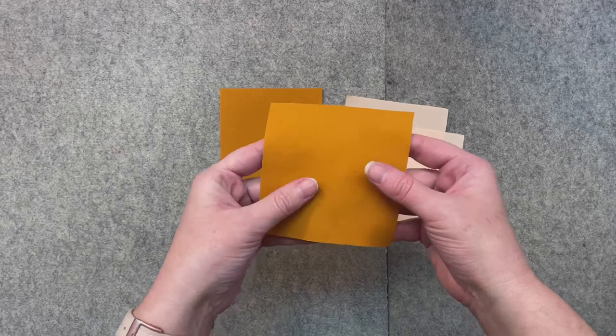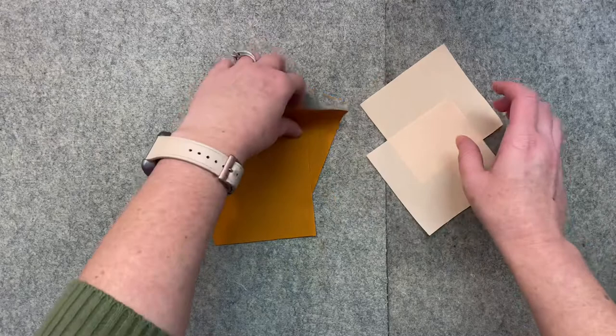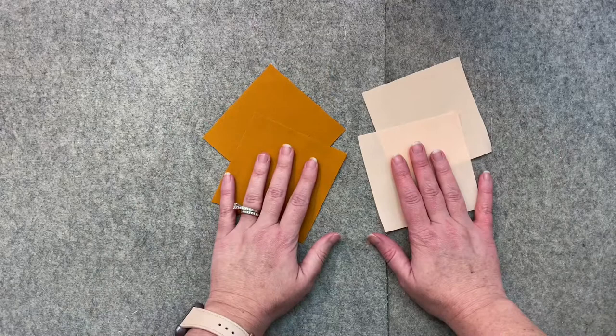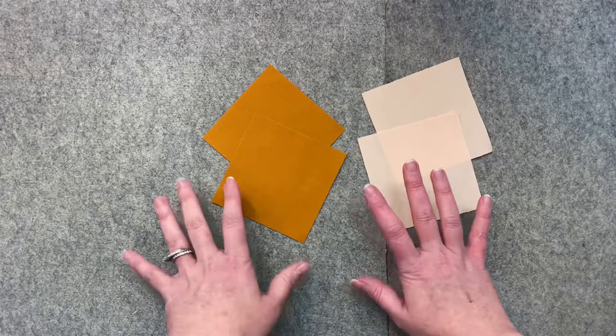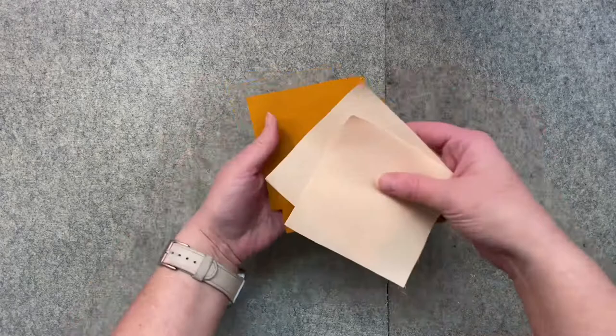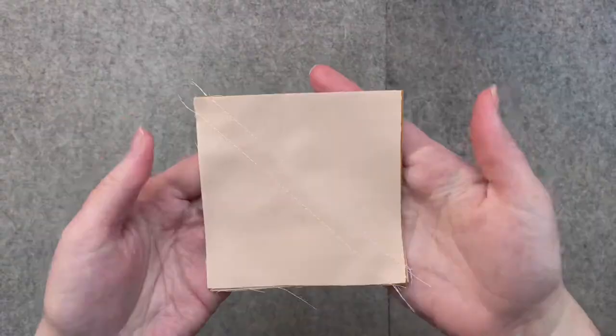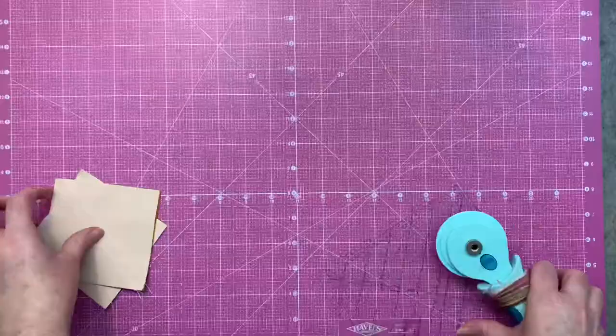A pinwheel starts out with half square triangles, so I'm not going to show you how to make half square triangles in this video because I have a separate video tutorial for that. But I will let you watch me work through it, so I'm going to get these sewn together and then we'll go from there.